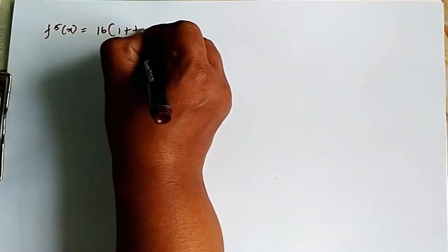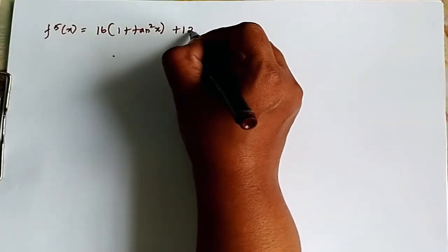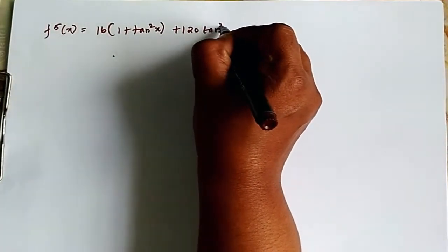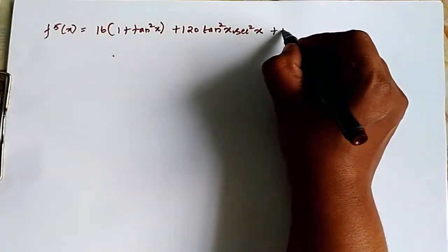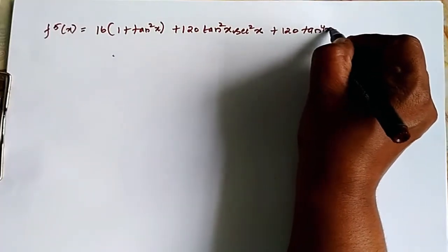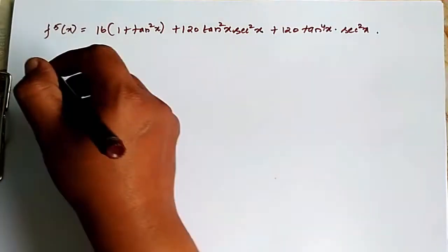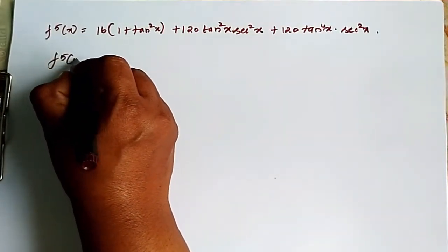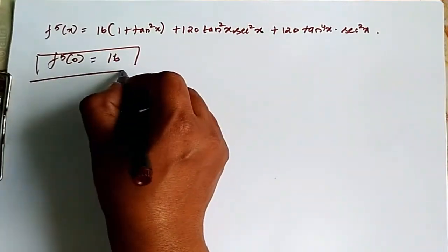secant square x plus 120 tan power 4x, secant square x. So now when we substitute 0, all the tan terms become 0, so we get f 4 of 0 is equal to 16.